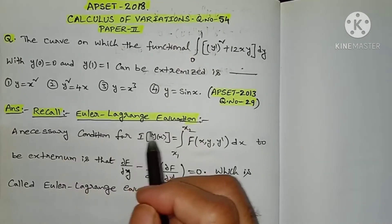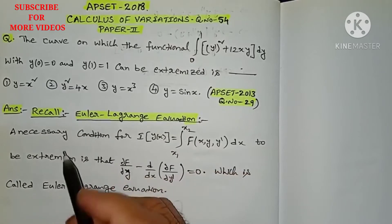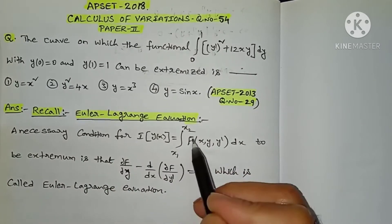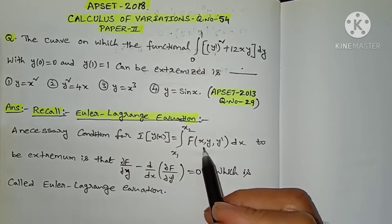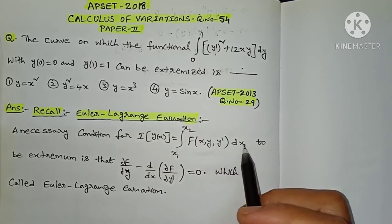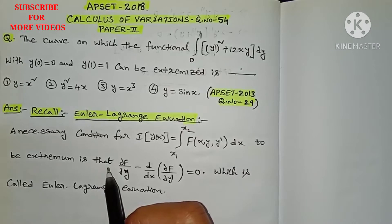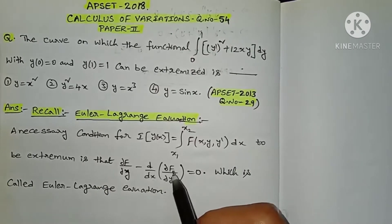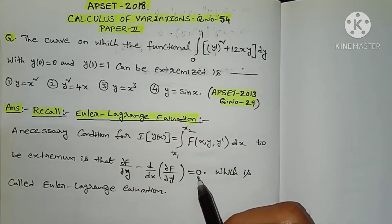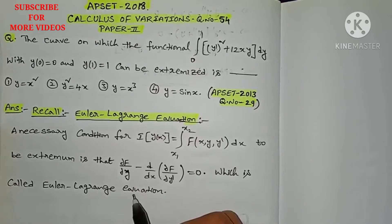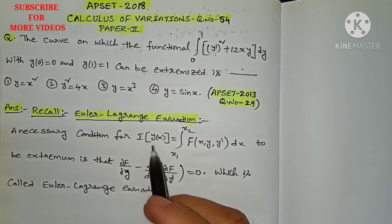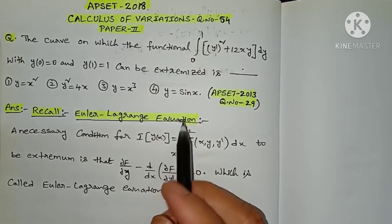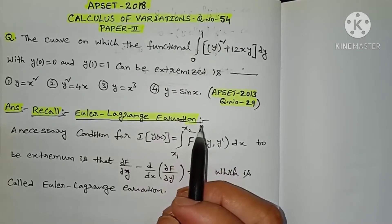We recall that the necessary and sufficient condition for I[y(x)] = ∫(x1 to x2) F(x, y, y') dx to be extremized is: ∂F/∂y − d/dx(∂F/∂y') = 0, which is called the Euler-Lagrange equation. Using this equation, we can find whether the given functional is extremized or not.